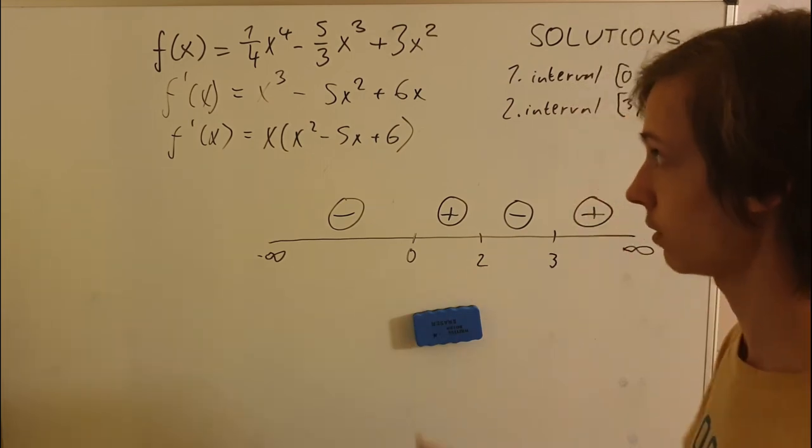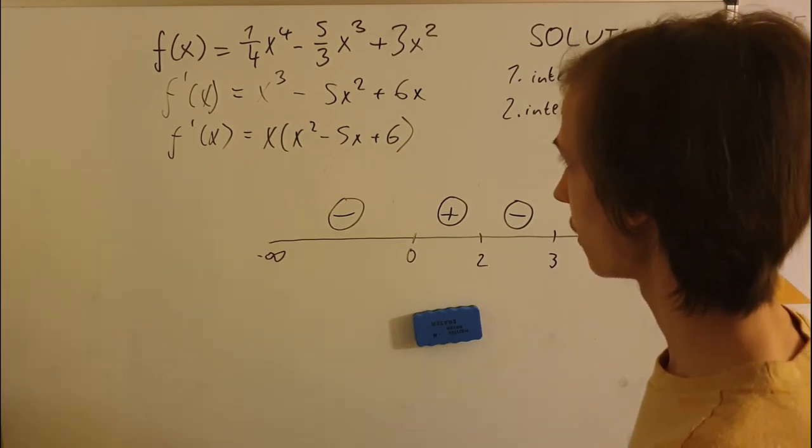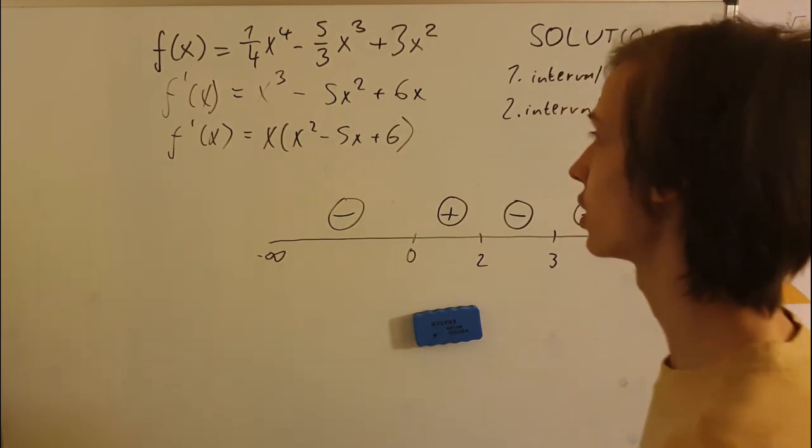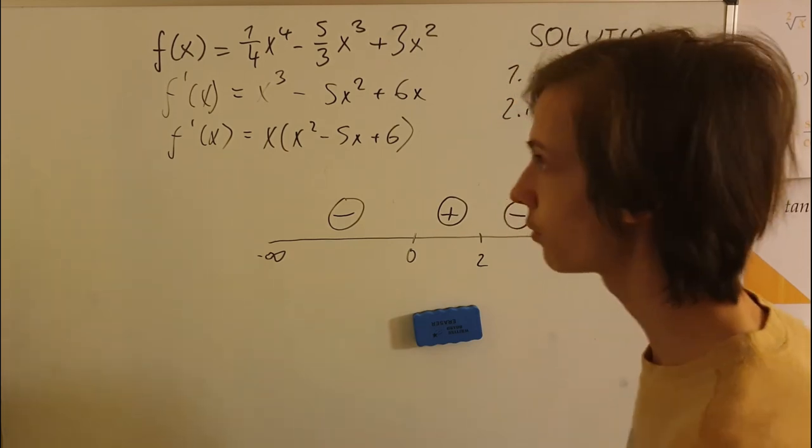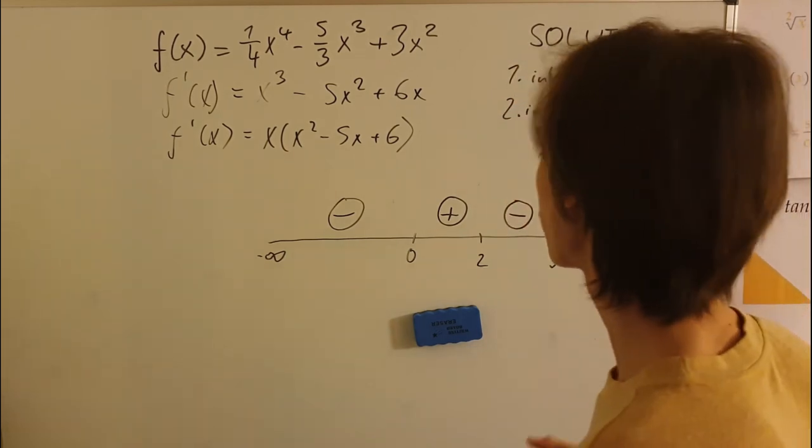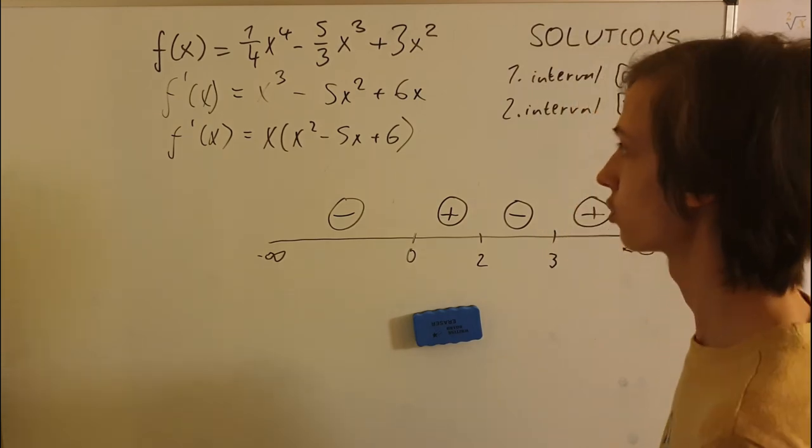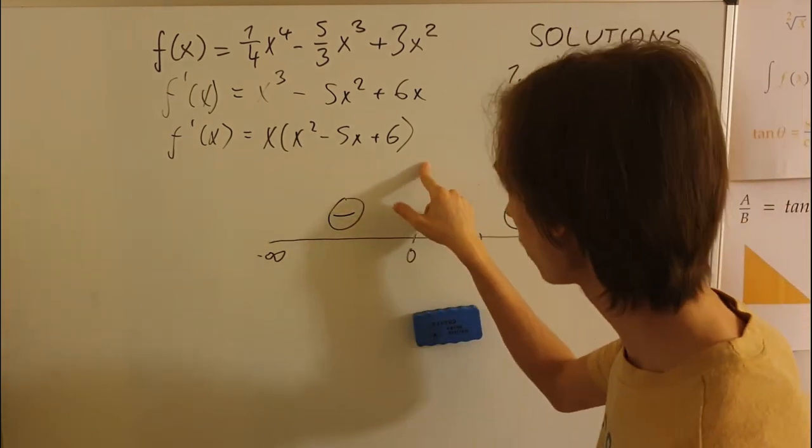So we were looking for intervals at which the function was rising. First of all, we found critical points, so we set the derivative equal to zero.